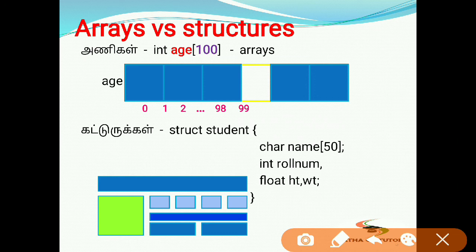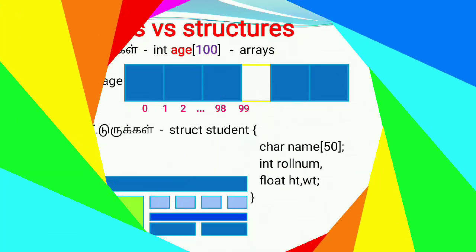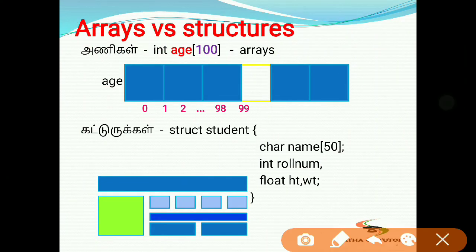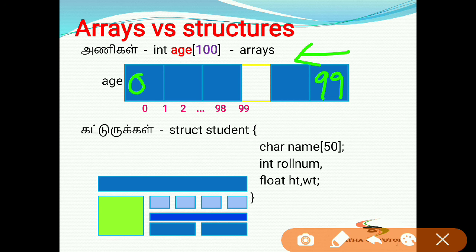Let's see an example: int age[100]. Here, int is the data type. This is an array example — you can store 100 age values (index 0 to 99). You can create a contiguous memory space and store values in it.